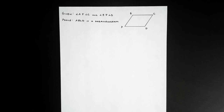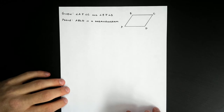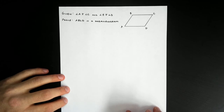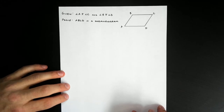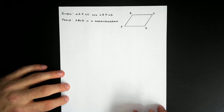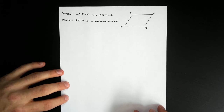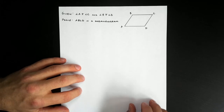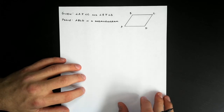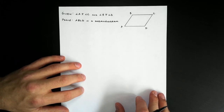Hello everyone. Let's take a look at another proof for one of the converses. In this case, this theorem states that if the opposite angles of a quadrilateral are congruent, then that quadrilateral is a parallelogram. So this is a theorem that gives us another tool to determine whether or not a quadrilateral is a parallelogram.